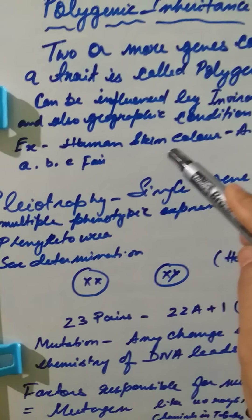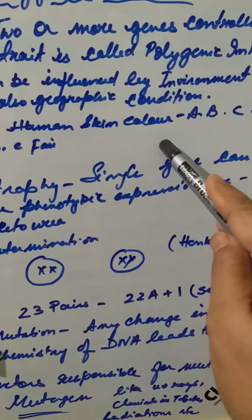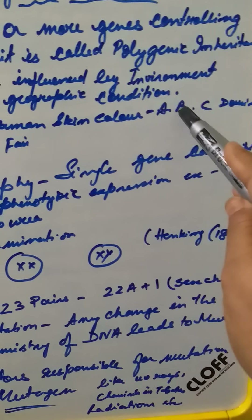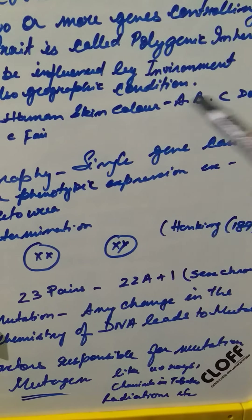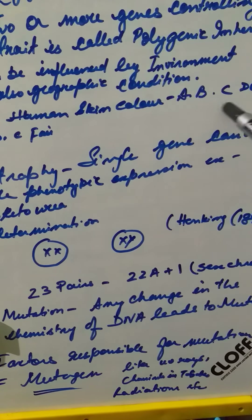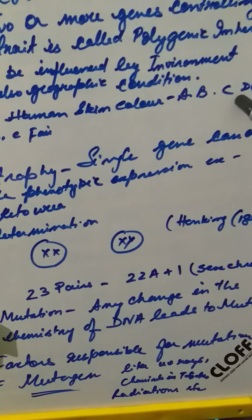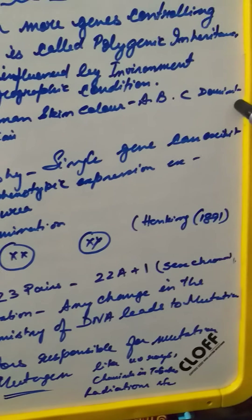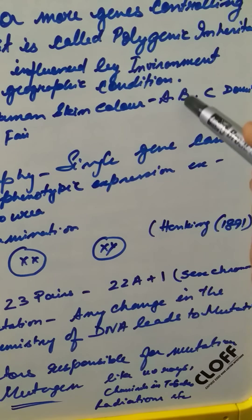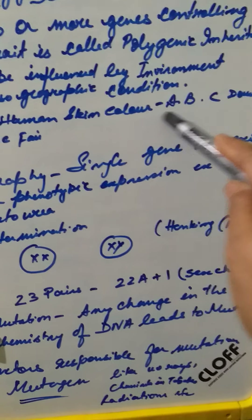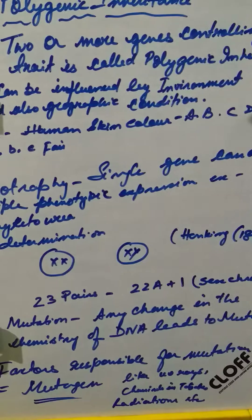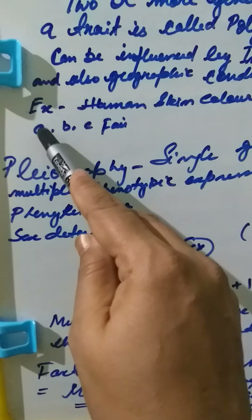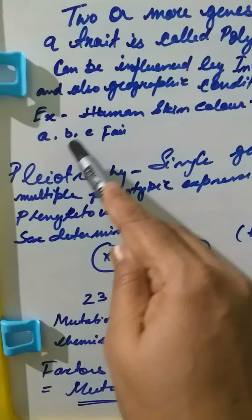For example, skin color is controlled by genes A, B, and C. These three genes are responsible for skin color and they represent the dominant variety. A very dark skin color will have double A, double B, and double C. A very fair person, extremely fair, will also have double A, double B, and double C in the recessive form.